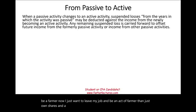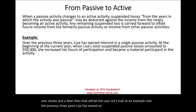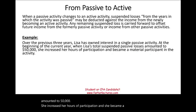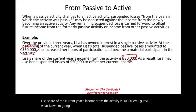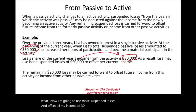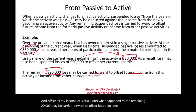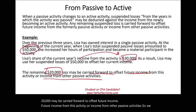Example: Over the previous three years, Lisa owned an interest in a single passive activity. At the beginning of the current year, when her total suspended passive losses amounted to $50,000, she increased her hours of participation and became a material participant. Lisa's share of the current year's income from the activity is $30,000. Now she can use those suspended losses to offset all $30,000 of income. The remaining $20,000 may be carried forward to offset future income from this activity or income from other passive activities.